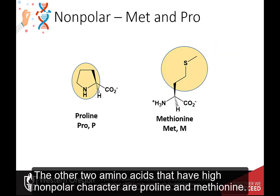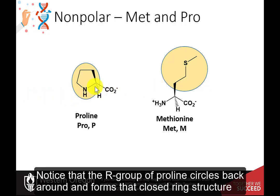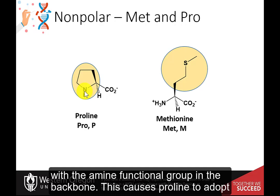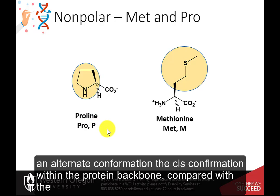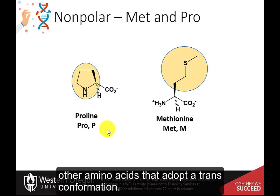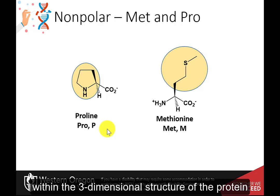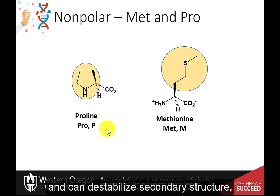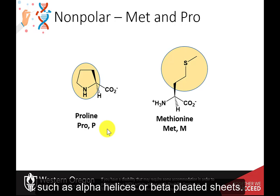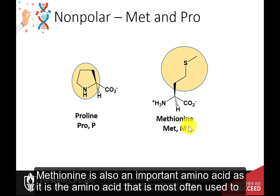The other two amino acids that have high nonpolar character are proline and methionine. Notice that the R group of proline circles back around and forms a closed ring structure with the amine functional group in the backbone. This causes proline to adopt an alternate conformation, the cis conformation, within the protein backbone, compared with the other amino acids that adopt a trans conformation. Thus, prolines often cause direction changes within the three-dimensional structure of the protein and can destabilize secondary structure, such as alpha helices or beta-pleated sheets.